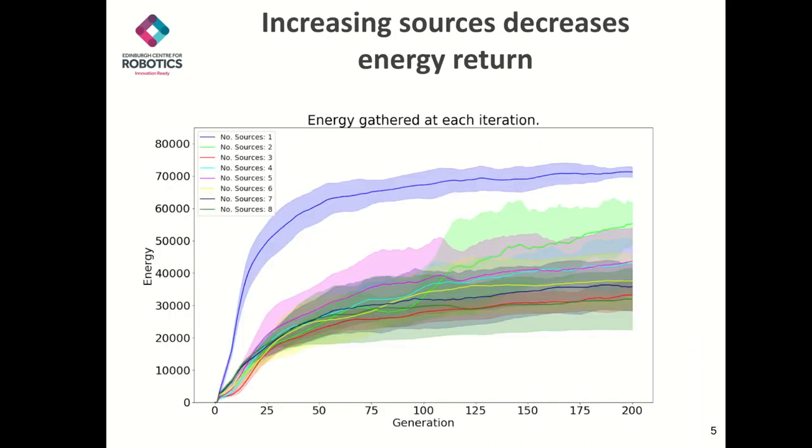This graph shows the average swarm's total energy gathered at the end of each generation. When one source is present, the swarm is able to learn quickly, and optimizes its behavior to gain around 70,000. When more sources are added, however, the swarm's efficiency significantly drops.